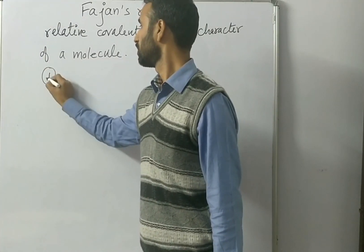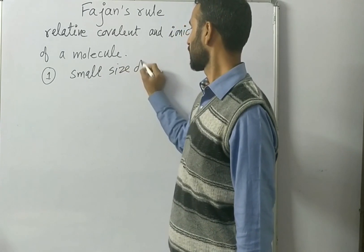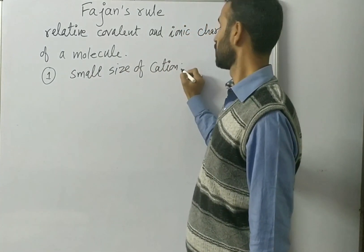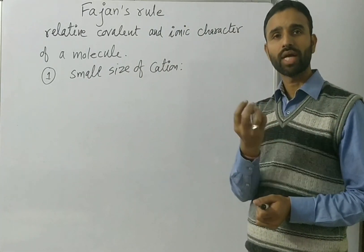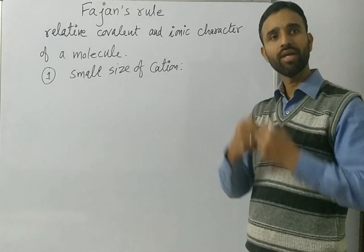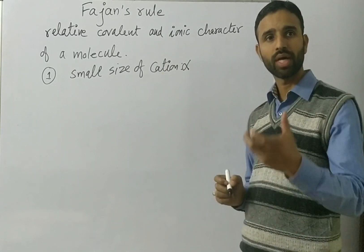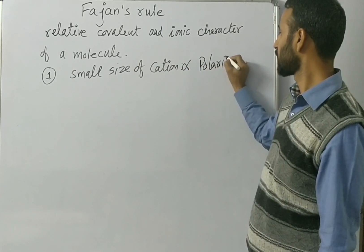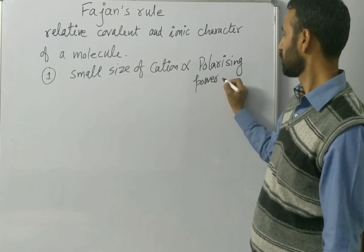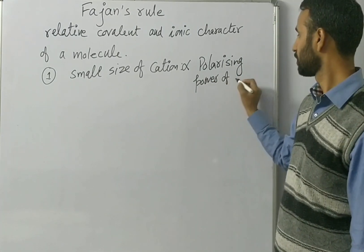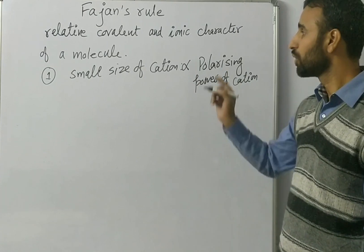The first rule is small size of cation. Smaller the size of the cation, the greater the positive field of the cation. So it attracts the anion more, and that attraction of the cation for the anion is known as the polarizing power of the cation. More is the polarizing power of the cation, more is the covalent character.